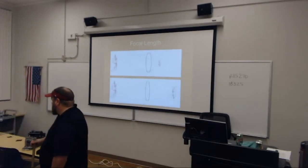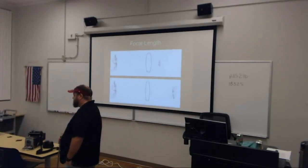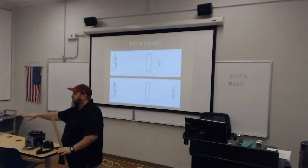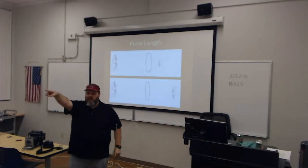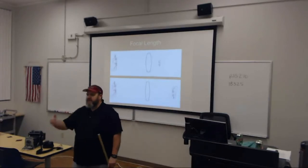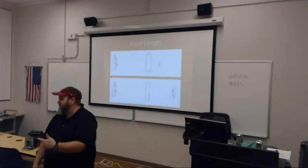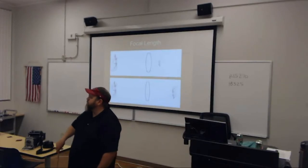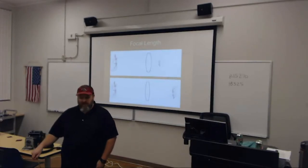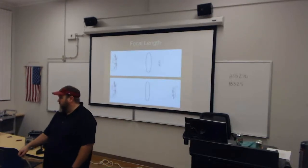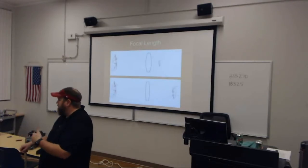Everybody adjust your focal length to 18 for me, please. I want you to pick a subject that's a little bit farther away. If you're in the front of the room, point your camera towards the clock on the back wall. If you're in the back of the room, point your cameras towards the flag. Pick a subject that's a little bit farther away from you. Adjust your focal length to 18 millimeters — the shortest one on your camera. If you're using your own camera and it goes shorter than 18, that's fine.